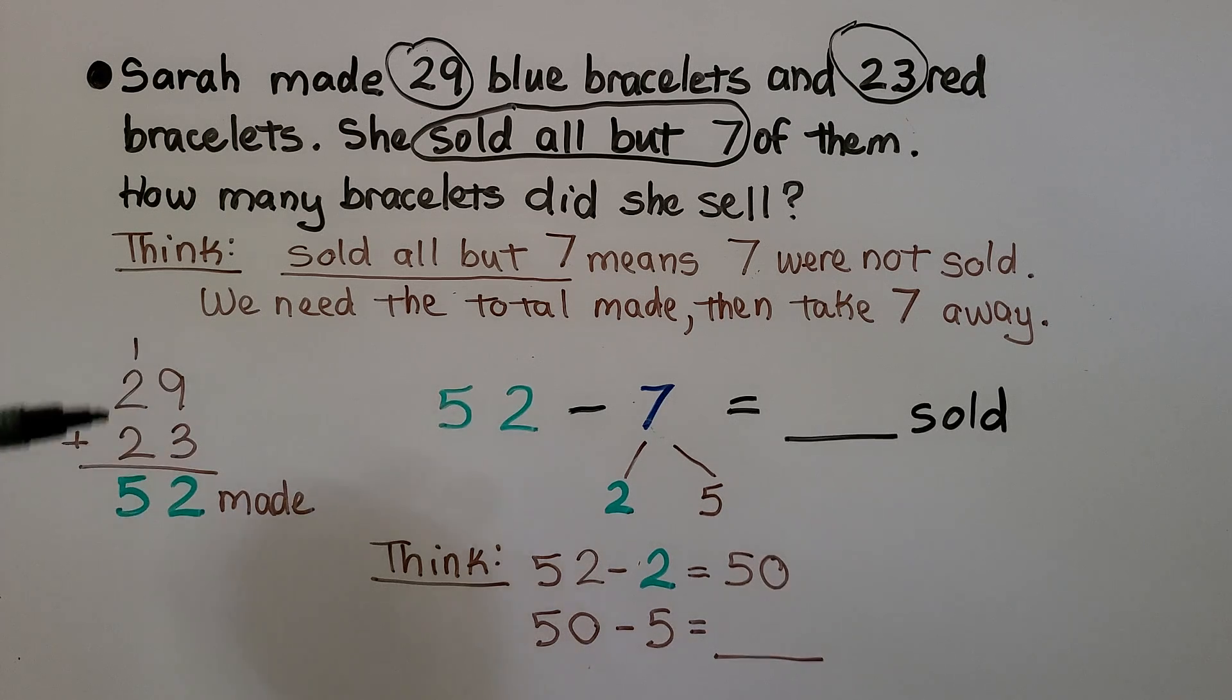We stack them nicely so they're in the correct place value columns. 9 plus 3 is 12. We regroup a 10 and put the 2 in the ones place. We add the tens. 2 plus 2 is 4, plus 1 more is 5. That means she made 52.